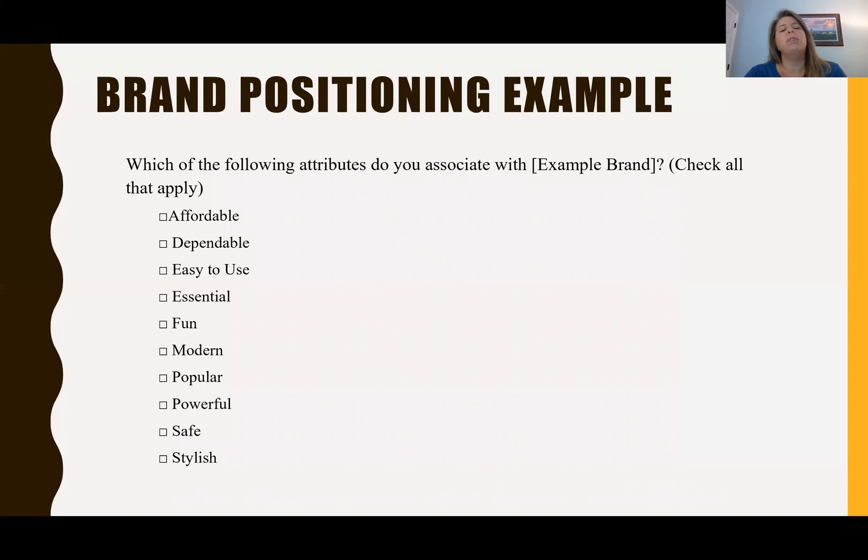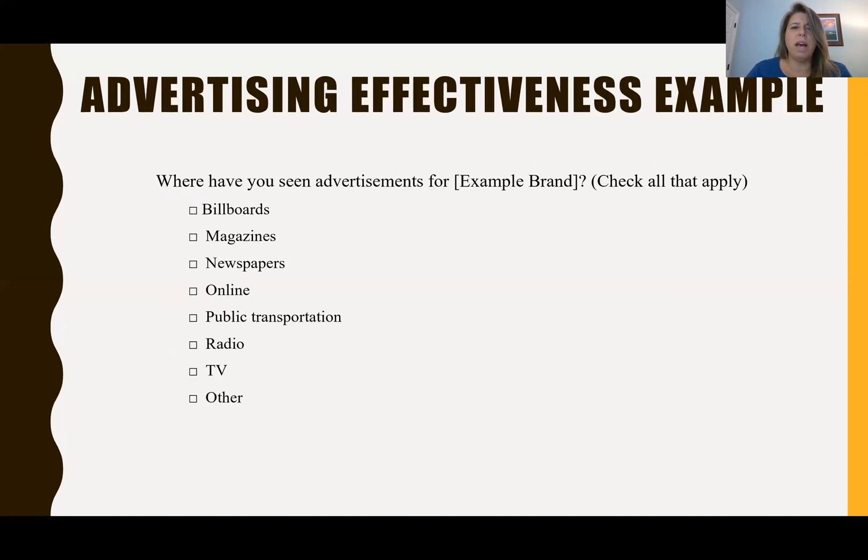So another example of a multiple response nominal variable is brand positioning. And so you can ask a question, which of the following attributes do you associate with, and you can input any brand here. So I put Example Brand and it has check all that apply, and so I can check all the attributes that I feel like this example brand has. And so that's an example of a multiple response nominal variable using brand positioning. We could use advertising effectiveness as an example, and so where have you seen advertisements for Example Brand, check all that apply, and I could check all the places that I remember seeing these advertisements and that would be a measure of advertising effectiveness.